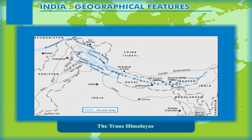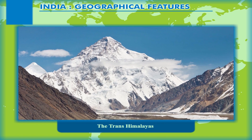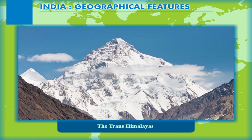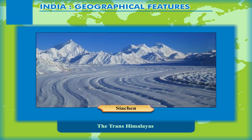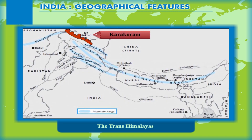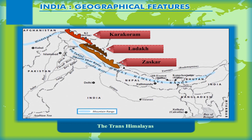The Trans-Himalayas comprise three small mountain ranges: the Karakoram, the Ladakh, and the Zaskar Ranges. The Karakoram Range, which runs almost parallel to River Indus, has the world's second highest peak, Mount K2 or Mount Godwin-Austin. Along with several other high peaks, it is also the land of some glaciers like the Siachen and Biafo glaciers, which are the second and third longest glaciers outside the Polar region. The Karakoram Pass connecting India and China also lies in this range. The Ladakh and Zaskar Ranges are parallel to the Karakoram Range, lying to the north and south of River Indus respectively.